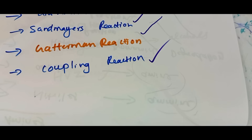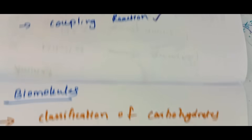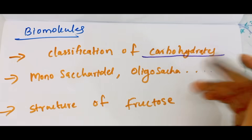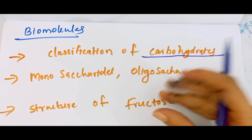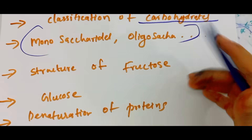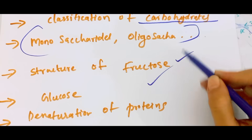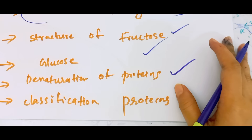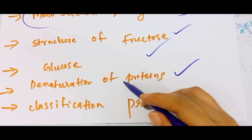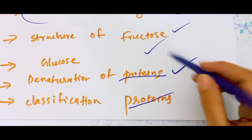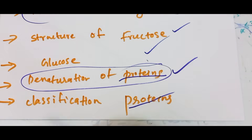Then biomolecules — carbohydrates classifications: monosaccharides, oligosaccharides, disaccharides — definitions and examples. Fructose and glucose structure. These are the two things. The protein — there are three parts of denaturation. Classification of proteins. Denaturation is the important part.